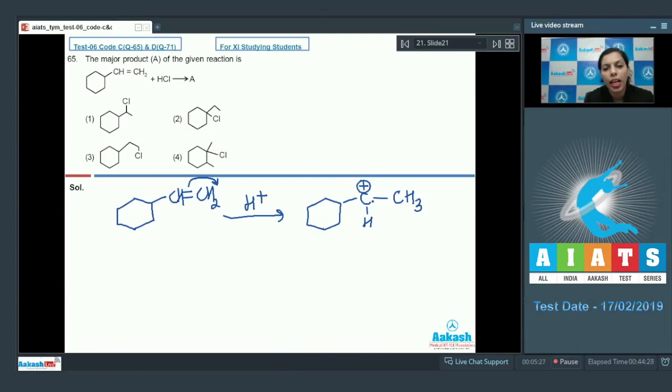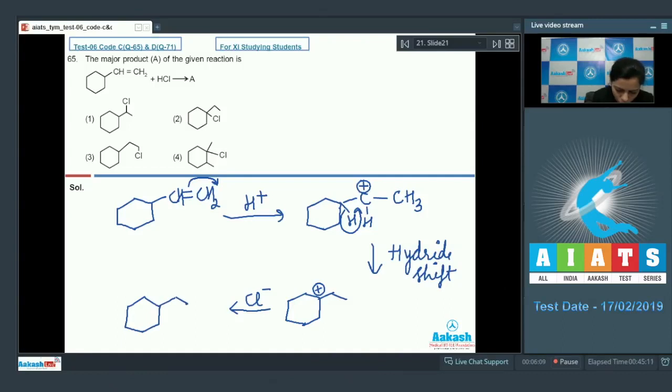Now in this case, this is secondary carbocation and that is less stable. In this case there would be hydride shift from this carbon, and that results in the formation of more stable carbocation that is the tertiary one. This way this more stable carbocation is formed. Now in this case there would be the attack of chloride, and ultimately the formation of this product is there. And this is the product that is the major product, and this is correctly given here in option 2. That's why this is the correct answer.